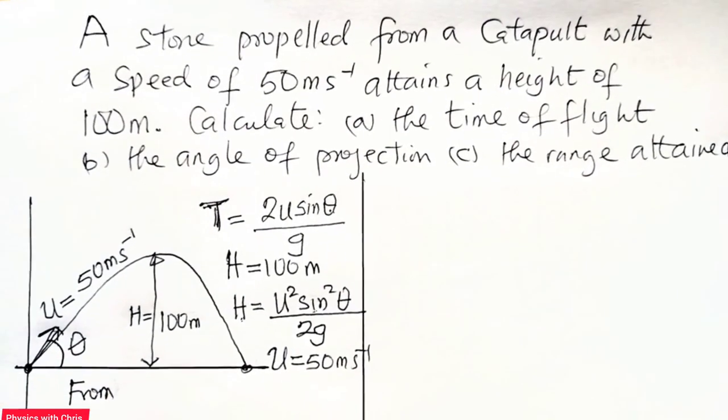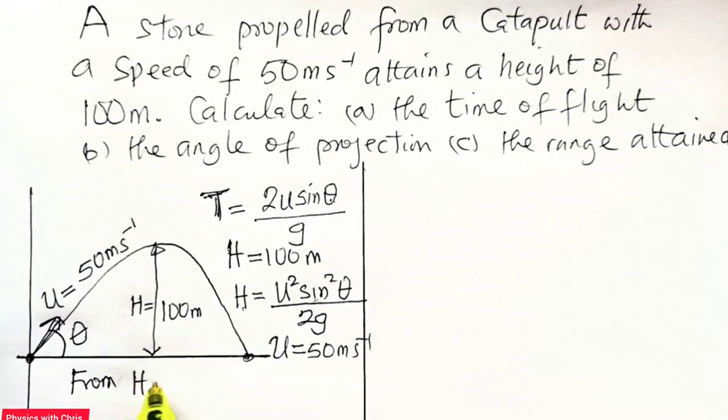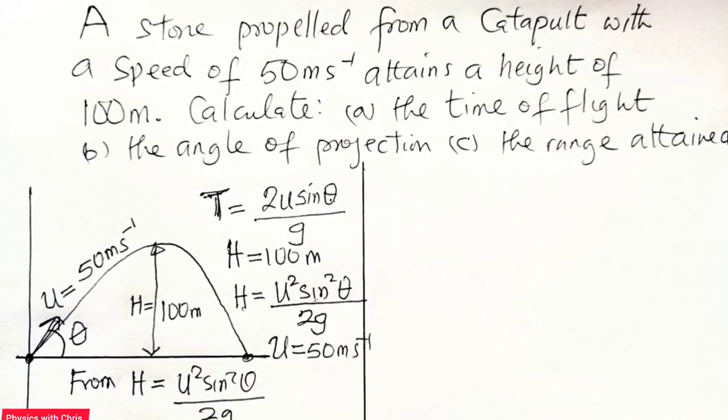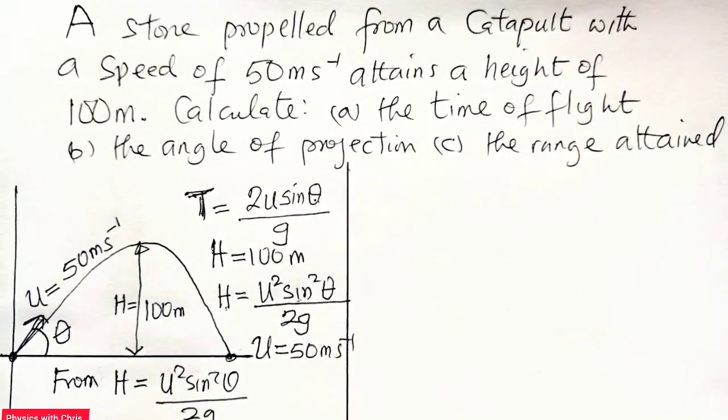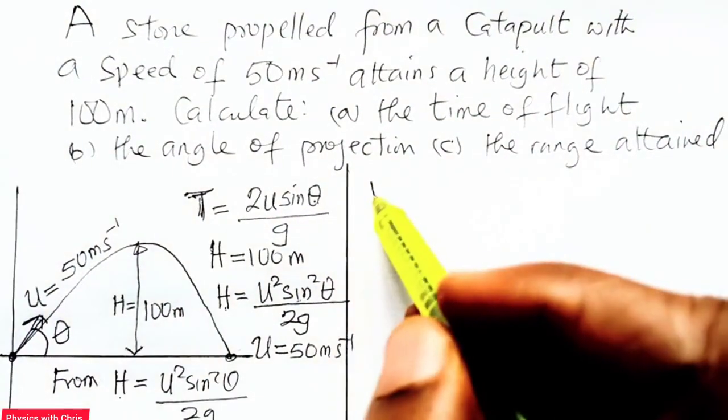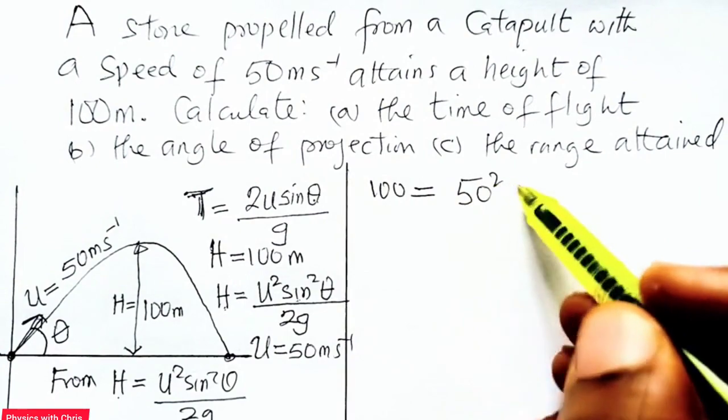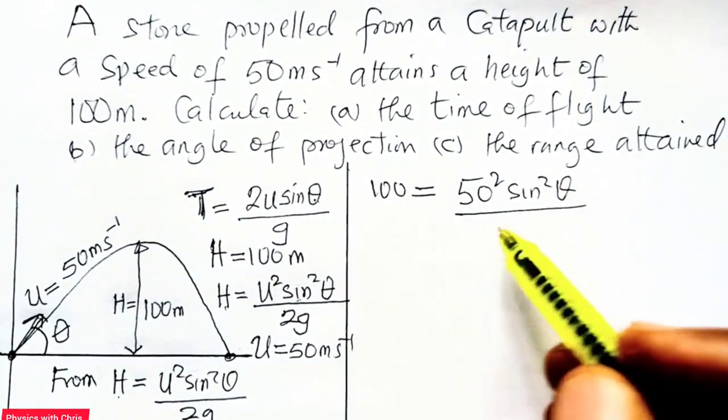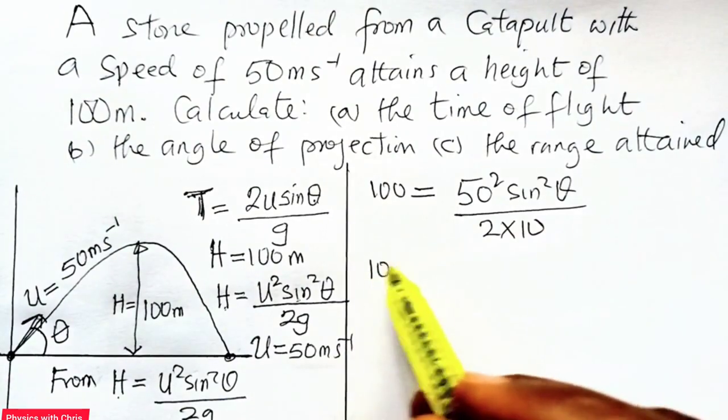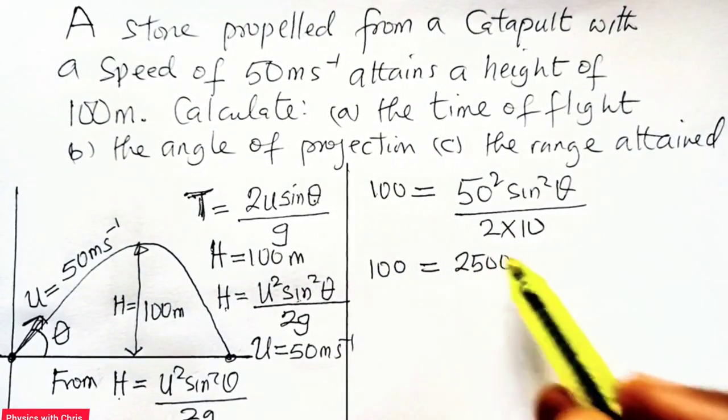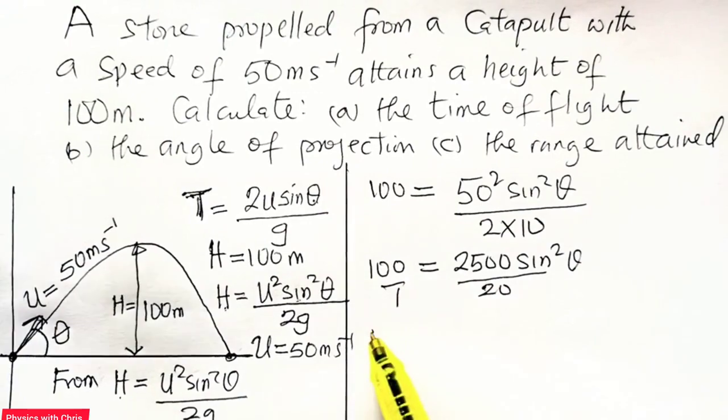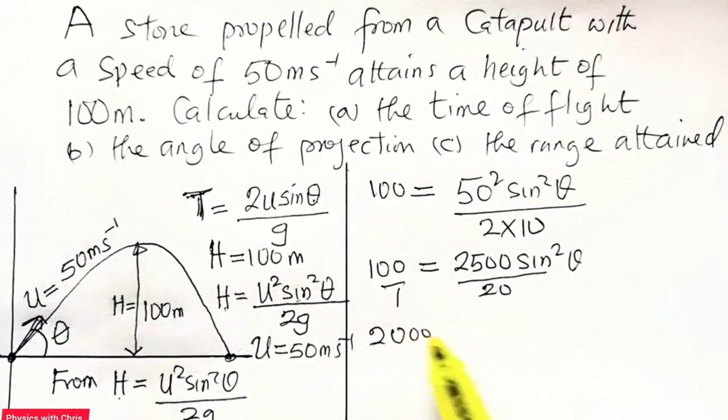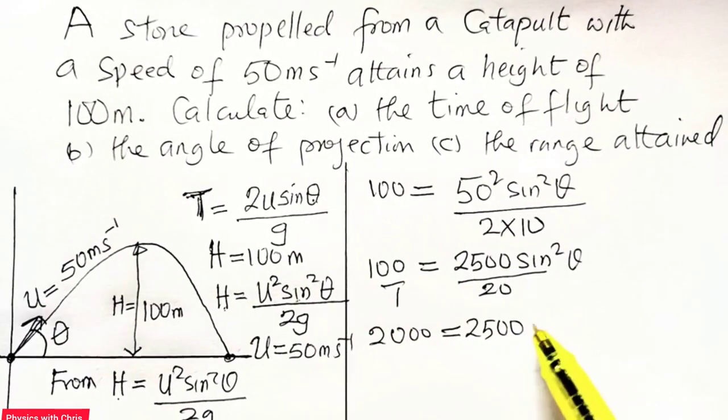So we have that to be equal to H equals U squared sine squared theta divided by 2 times g. So when we substitute the values for the variables, the maximum height is 100, so 100 equals 50 squared sine squared theta divided by 2 times 10. So that gives me 100 because 50 squared is 2500 sine squared theta over 20. When I cross multiply, I'm going to have 20 times 100, that is 2000, equals 2500 sine squared theta.